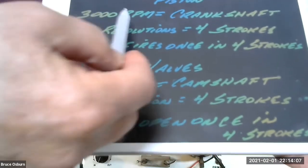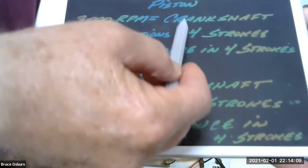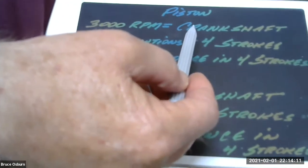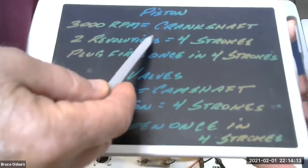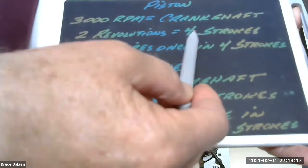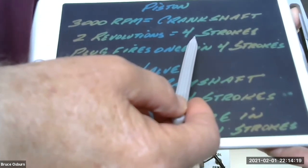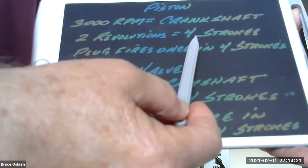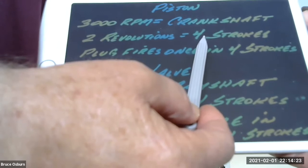So 3,000 revolutions per minute, that's how fast the crankshaft is spinning. Two revolutions of the crankshaft is what it takes for the engine to produce all four strokes: intake, compression, power, and exhaust.